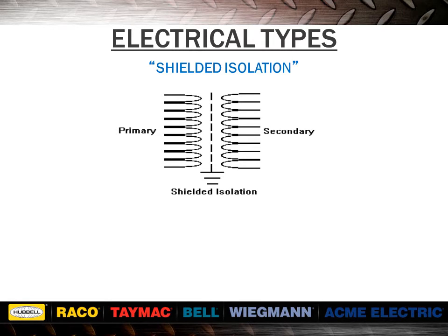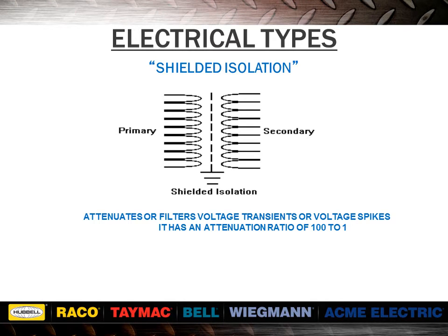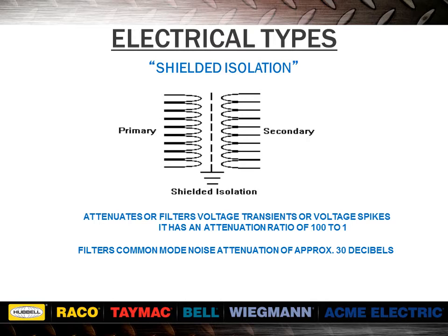A shielded isolation transformer has all the features of an isolation transformer, plus it incorporates a full metallic shield between the primary and secondary windings. The shield is usually copper or aluminum. This electrostatic shield, or Faraday shield, is connected to earth ground and performs two functions: it attenuates or filters voltage transients or spikes with an attenuation ratio of 100 to 1, and it filters common mode noise with an attenuation of approximately 30 decibels. The shielded unit is preferred over a standard isolation unit because it provides protection for sensitive and critical equipment. When more than one shielded unit is installed between the source and the load, the effect is referred to as cascading and greatly improves power quality. As a standard feature, all ACME general purpose units 250 VA and larger, with an S as the last digit of the item number, are shielded at no added cost.